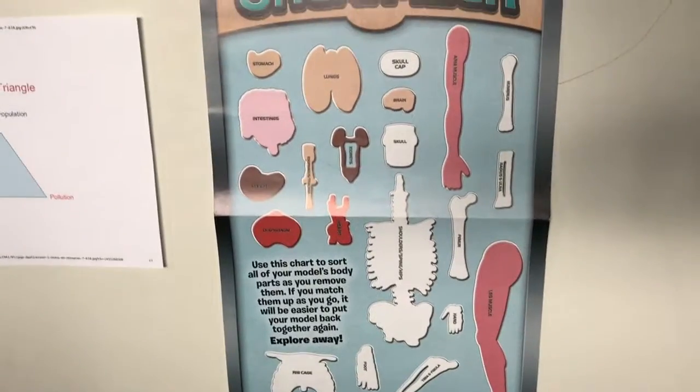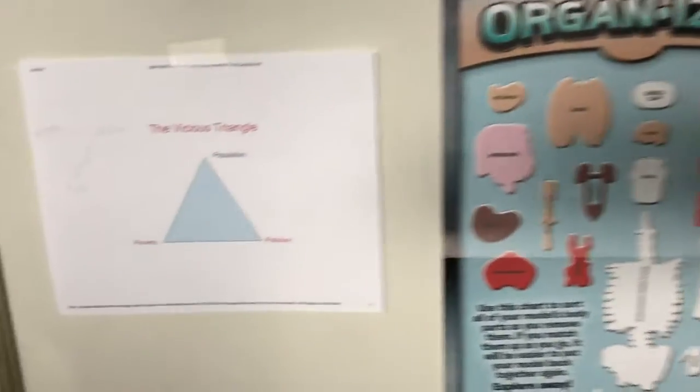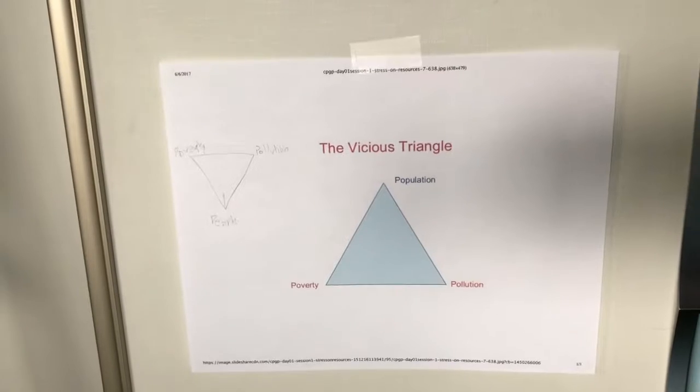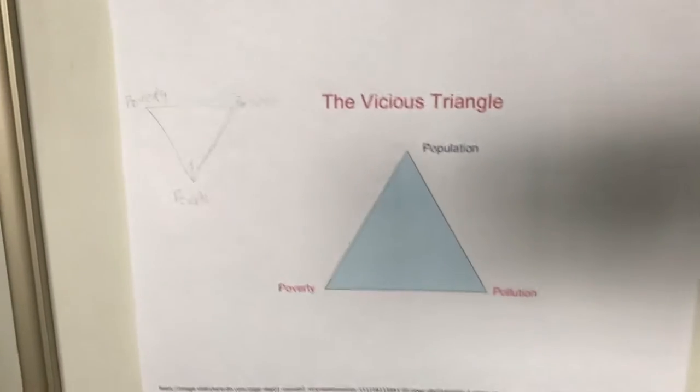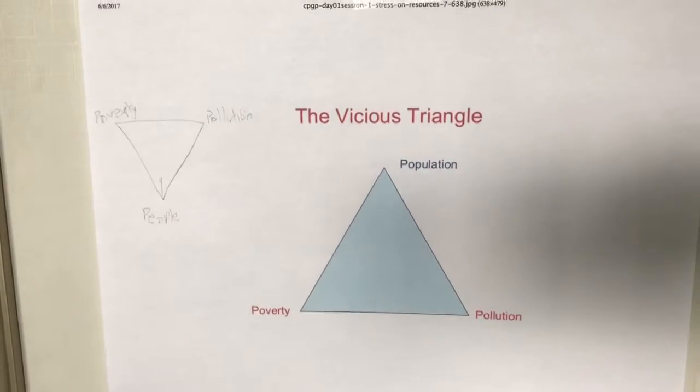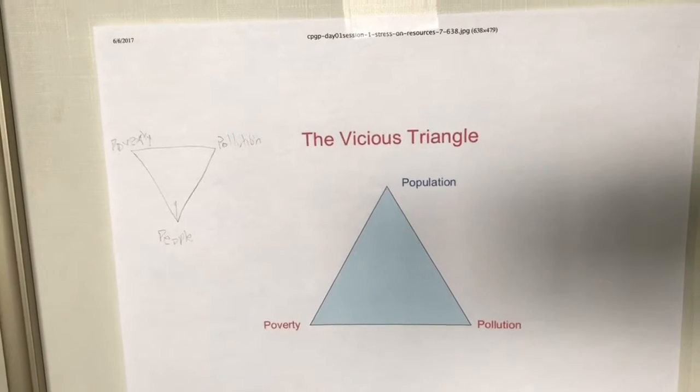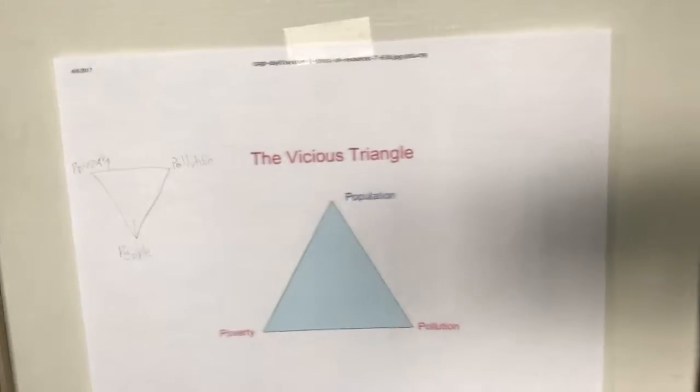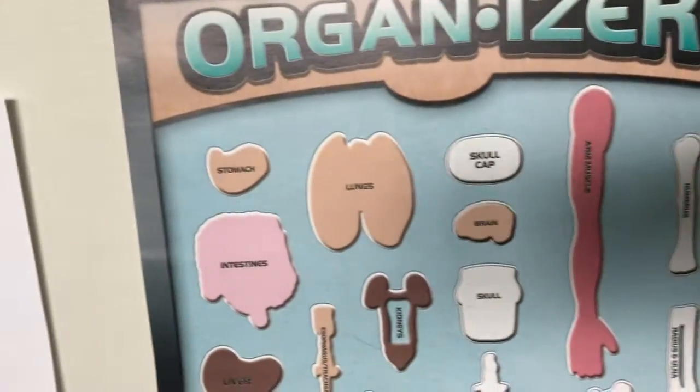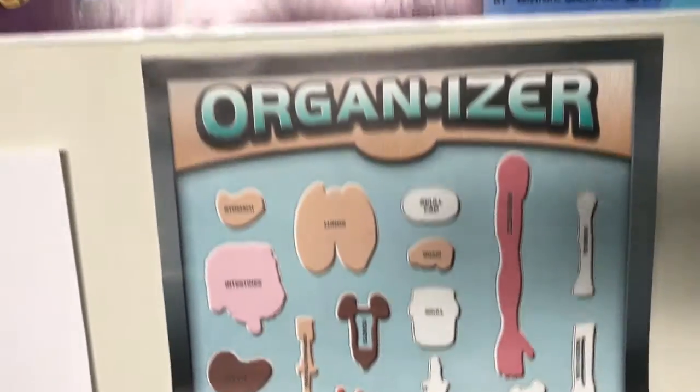And then the sociologist will say, look, it's a vicious triangle. You have population, increases pollution, and that increases poverty, no matter how you look at it. These human bodies are eating up the planet. That's the level of the human body organization.